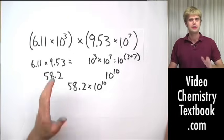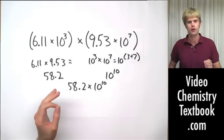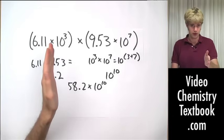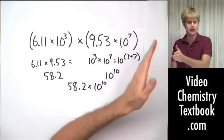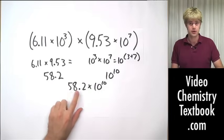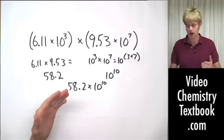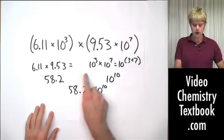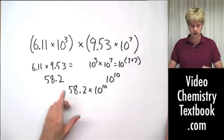But remember, scientific notation is always written a certain way. We always want to have only one digit to the left of the decimal point and then the decimal point and then everything else. Here we have two numbers to the left of the decimal point, so it's not written as correct scientific notation. What I want to do is take this and change it to correct scientific notation.